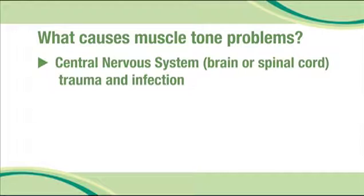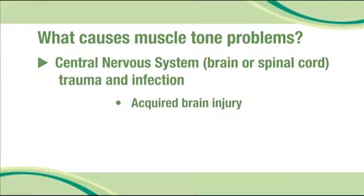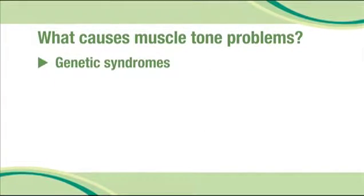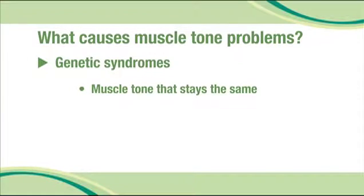The damage might have happened before or during birth, or any time during infancy or childhood. Examples include acquired brain injury, spinal cord injury, cerebral palsy, and stroke. Genetic syndromes are another common cause. Some syndromes cause children to be born with a difference in muscle tone that stays the same throughout the child's life. Down syndrome, which causes low muscle tone, is an example of this kind of syndrome.